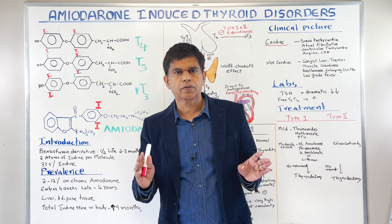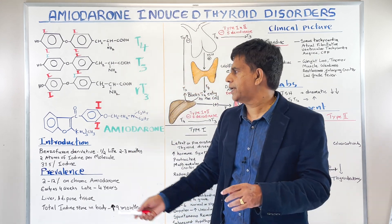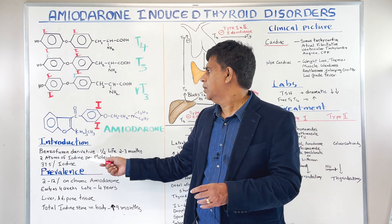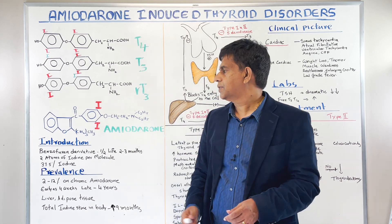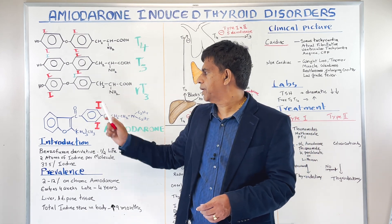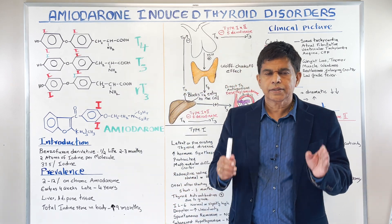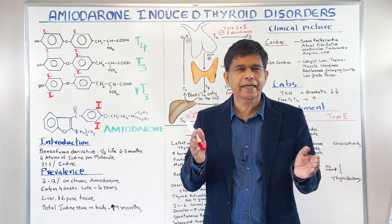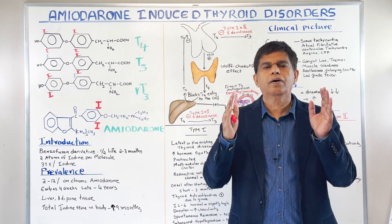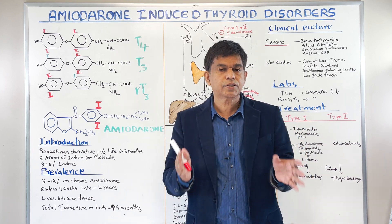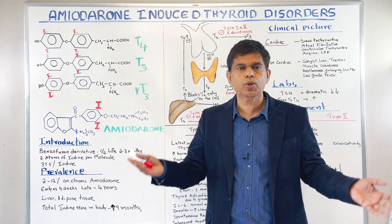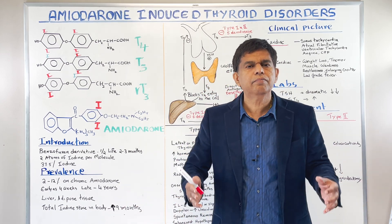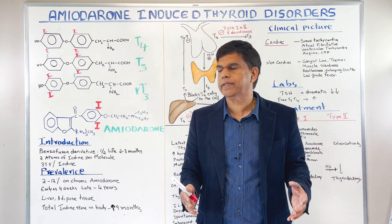What is the structure of amiodarone? If you look at amiodarone, you have a benzoyl-furan derivative and two atoms of iodine per molecule. Amiodarone contains lots and lots of iodine — almost like 38 to 40% of it is iodine. If somebody gives you a 200 milligram tablet, that's the normal tablet — 75 milligrams of that is iodine. Imagine how much iodine is right there.